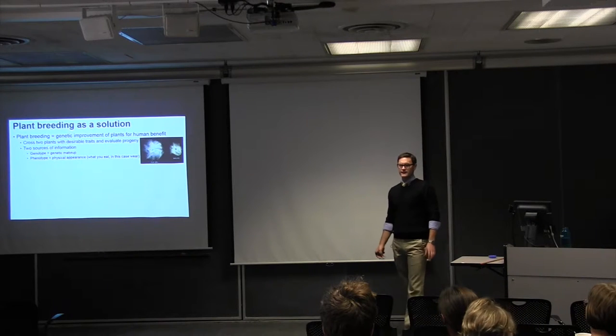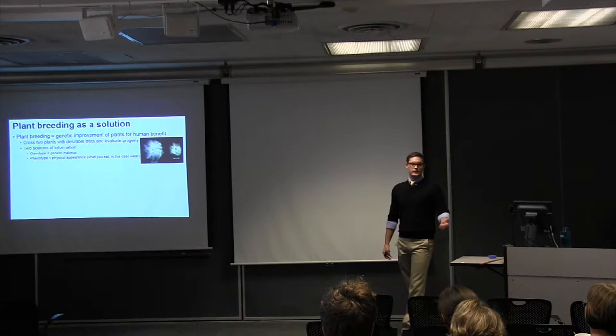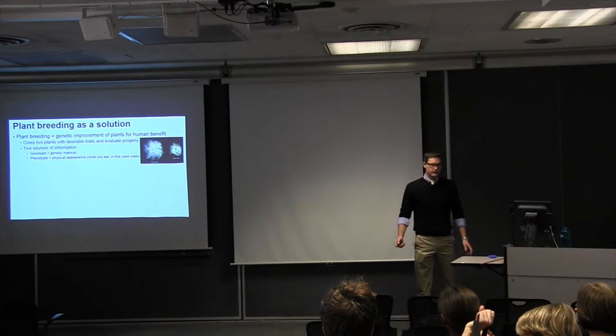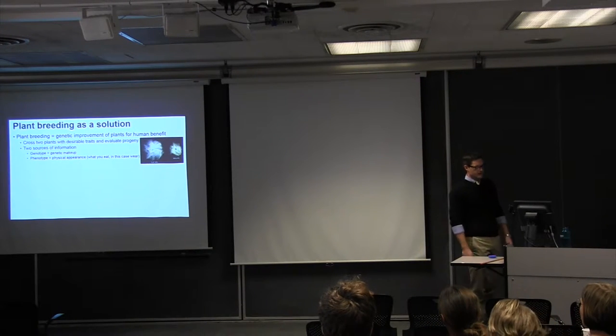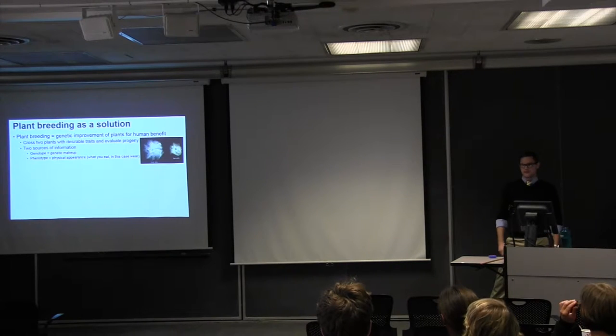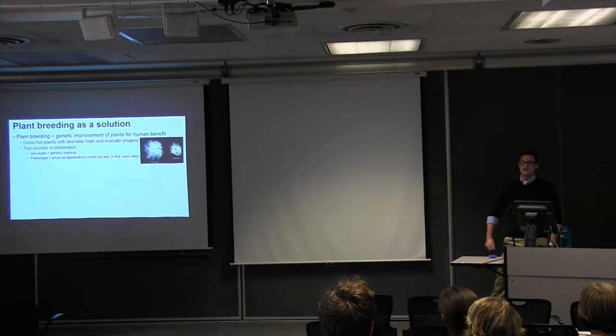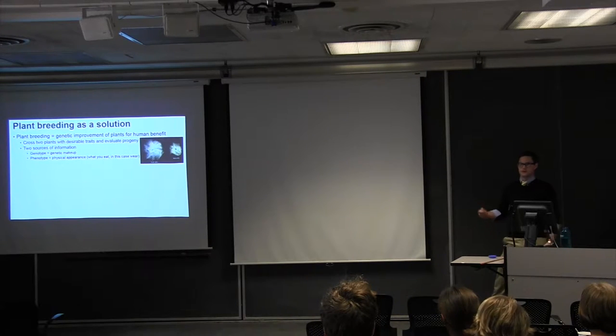And the basics of it is we take two plants that both have desirable features. We intermate them. We evaluate their progeny. From the progeny, we're trying to identify the line that has the most amount of favorable genes from each parent. And in order to do that evaluation, we use two sources of information. We use the genotype, which is its genetic makeup. And the phenotype, this is the actual physical appearance of the plant. This is typically what you eat, but in this case, it's going to be what you wear, so actual lint yield.